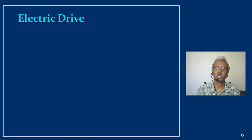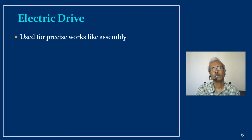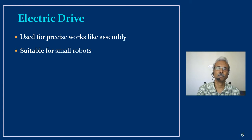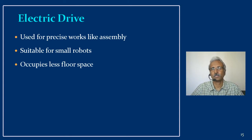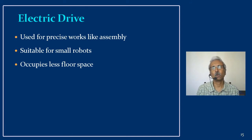Electric drives are used for precise work like assembly where very minute movements are needed. They are suitable for small robots since motor size can be varied per requirement. Electric drives occupy less floor space — unlike hydraulic systems needing tanks, filters, and pumps, or pneumatic systems needing compressors and tanks, with an electric motor you simply place the motor on the joint and the job is done. This is very important in industrial environments.